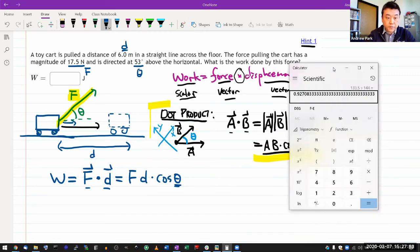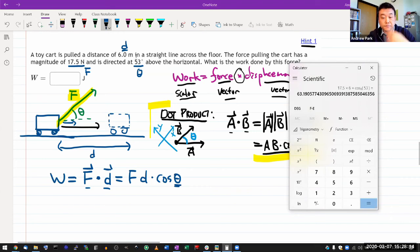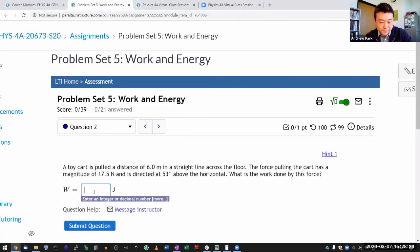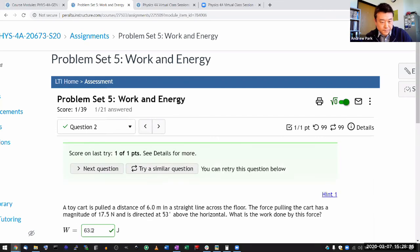It's a force, 17.5 times d, six meters times, and I know how to use my calculator. I put in the angle first, and then cosine equals, so 63.19, and I use the SI unit, newtons and meters. So that should give me the SI unit of energy, joule. So 63.2 should be correct. So 63.2, and we're done.